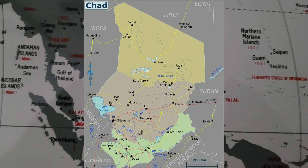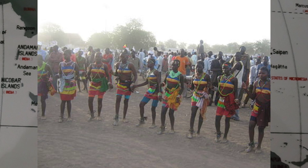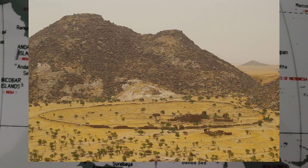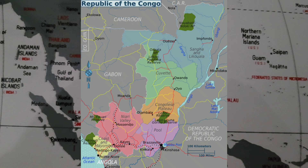Chad is a landlocked country at the crossroads of North and Central Africa. Chad has a population of 16 million people. Its total area is 1,284,000 square kilometers or 496,000 square miles, which is 20th in the world. Chad's economy is largely based on agriculture and livestock, with crops such as cotton, peanuts, and sorghum being important exports.